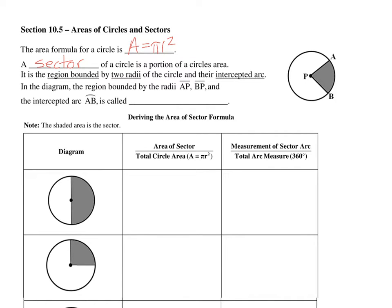A sector of a circle is a portion of a circle's area — like a piece of a pie. It is the region bounded by two radii and their intercepted arc. In this diagram we have intercepted arc AB, and radii AP and BP, and we call this sector APB.